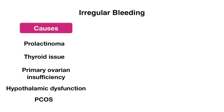Some causes of irregular bleeding include prolactinoma, a thyroid issue, primary ovarian insufficiency, or hypothalamic dysfunction. Additionally, make sure to keep PCOS on your differential, as it is a major cause of irregular bleeding.